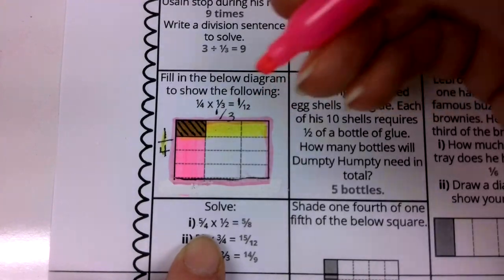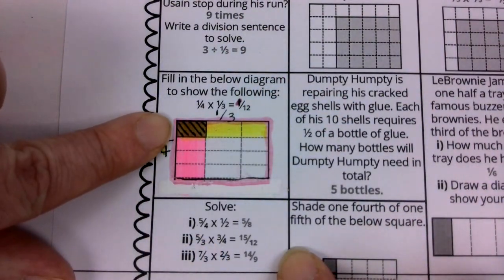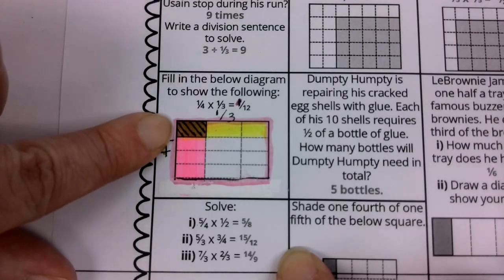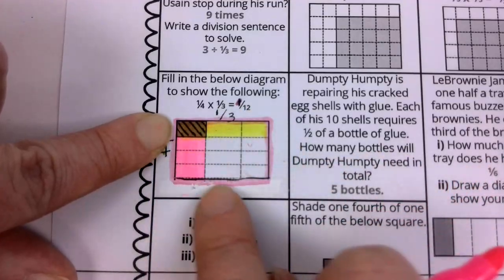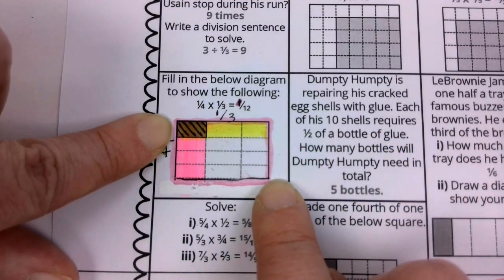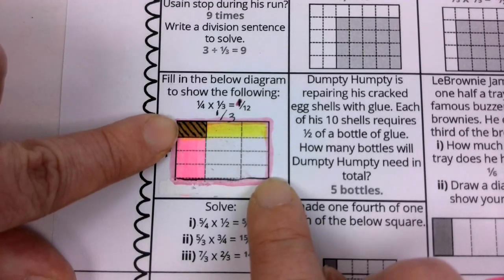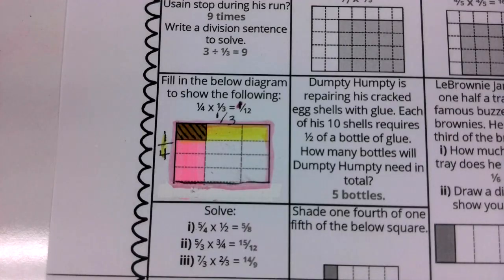Now, boys and girls, our answer, this one occurs where the shading overlaps. Only one of these rectangles has overlap shading, but I count up how many total rectangles I made in the entire whole, there were 12 rectangles in the entire whole. So my answer here is one-twelfth because one-twelfth of my shape has overlapping shading.